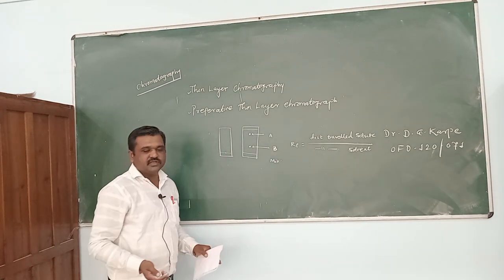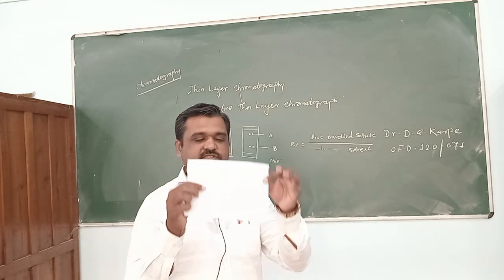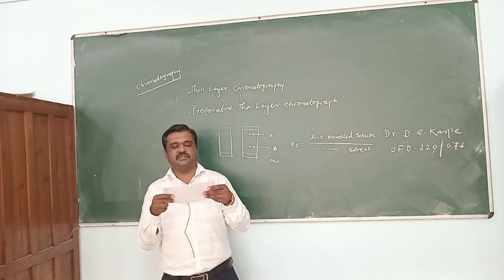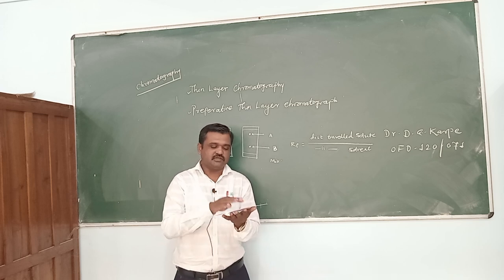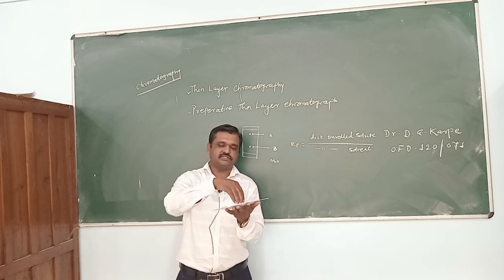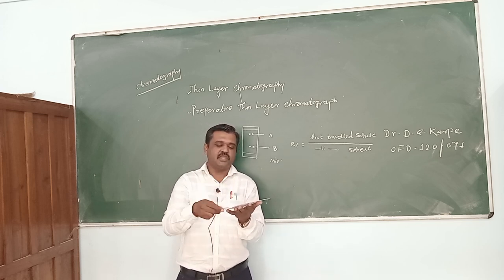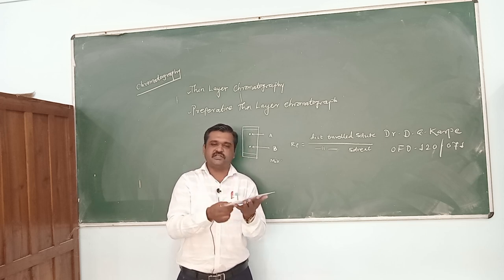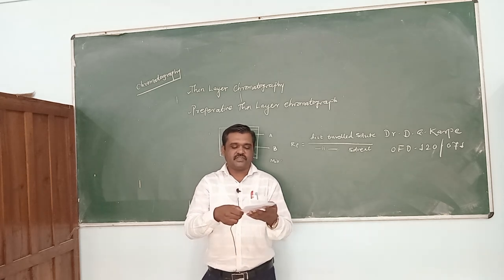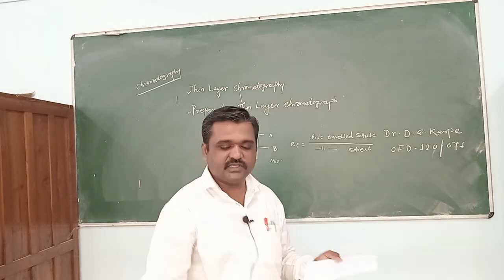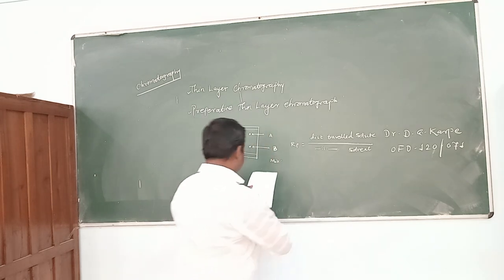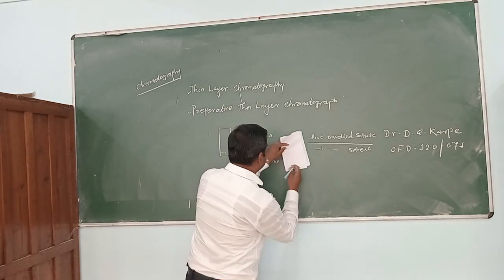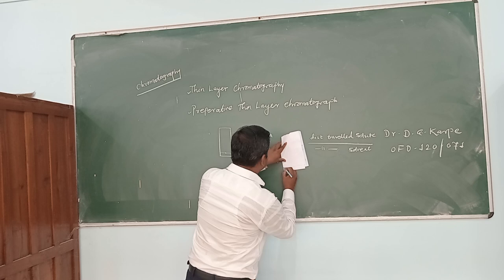Therefore, purification can be carried out by using a preparative TLC plate. Suppose a 10 cm by 10 cm plate is used. When the silica gel slurry is prepared in water, it is spread on the TLC plate and dried for 12 to 20 hours. After drying, the sample is loaded at the base of the TLC plate. On a big TLC plate, about 100 mg of sample is loaded.